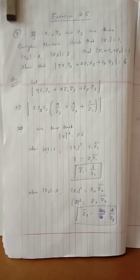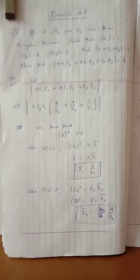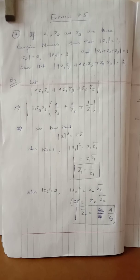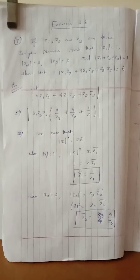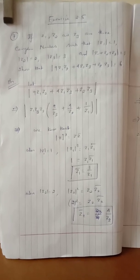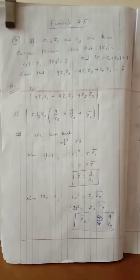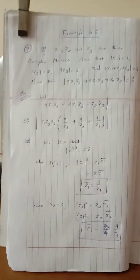Modulus of Z1 equals 1, so Z1 times Z1 bar equals 1, meaning Z1 bar equals 1 by Z1. This is the first modification. Second point: modulus of Z2 equals 2.